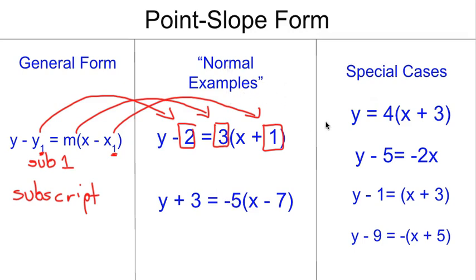And just as with slope-intercept form, we have some special cases. Sometimes these things don't look exactly like the general form, but are still point-slope form. For example, in this top one, y equals 4 times quantity x plus 3, notice those parentheses. The parentheses are a dead giveaway for point-slope form. But in this case, y sub 1 is 0. And when I have that 0 added or subtracted, that doesn't change anything, so I don't have to write it. So even though I don't have anything paired with my y on the left-hand side of the equation, this is still going to be point-slope form.